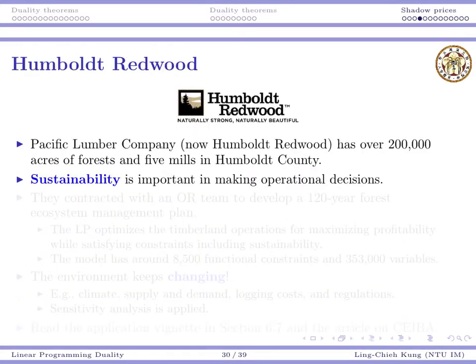Here, I want to first give you another example adapted from the textbook. Pacific Lumber Company, which is now the Humboldt Redwood Company. This company owns a large amount of forest and five mills in the United States, in California. And their operations is to get forest, get lumber and then sell them.